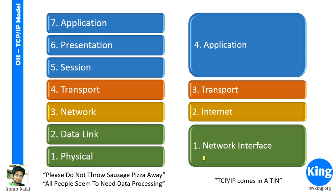You need to know that layer 7 is the application layer, layer 1 is the physical layer, and layer 5 is the session layer. One way of remembering the sequence is by using mnemonics. One of the most popular mnemonics to remember the OSI reference model from bottom up is: Please Do Not Throw Sausage Pizza Away — P-D-N-T-S-P-A.